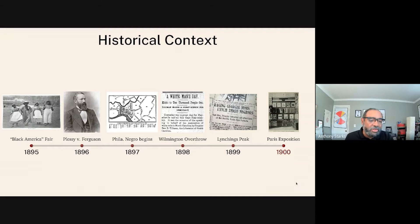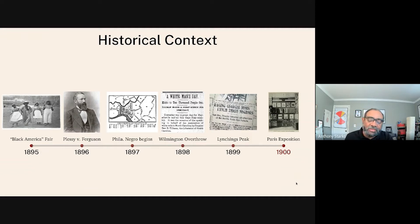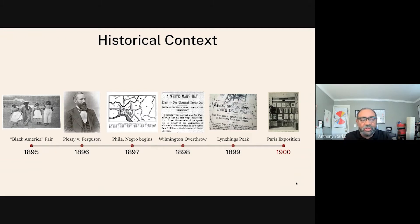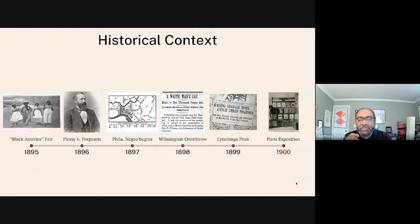The next year, the landmark Supreme Court decision Plessy versus Ferguson was handed down, which upheld the constitutionality of racial segregation under the separate but equal doctrine. The next year in 1897, Du Bois undertook what's called the Philadelphia Negro study, where he studied the plight and the conditions of Black people that lived in Philadelphia at the time.